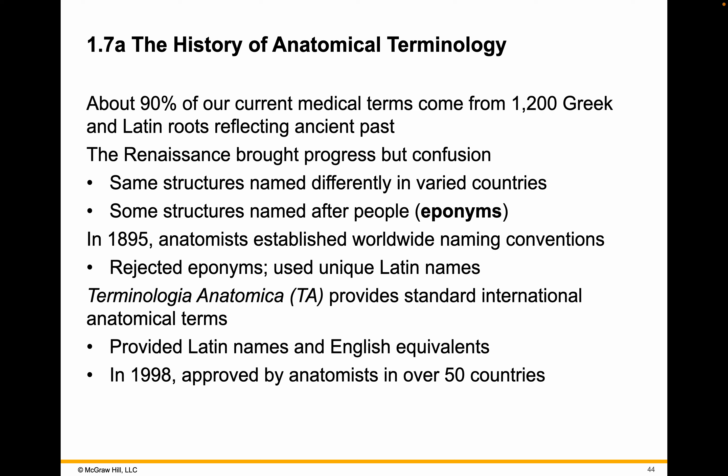About 90% of our current medical terms come from about 1,200 Greek and Latin roots, reflecting the ancient study of medicine. The Renaissance brought some progress but also added confusion — structures are named differently in various countries, and some structures are named after people. In 1895, anatomists together established worldwide naming conventions, got rid of many eponyms — things named after people — but not all, and used unique Latin names.